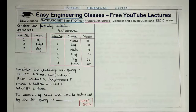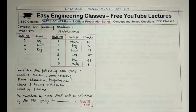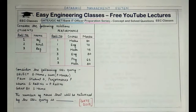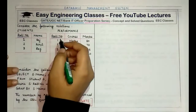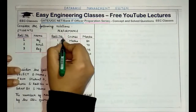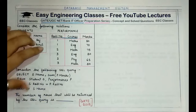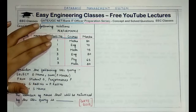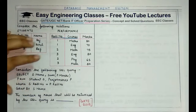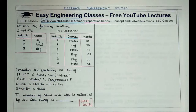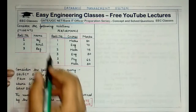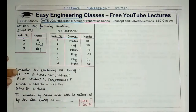In the Performance table, role number alone cannot be a primary key. A combination of role number and course will be the primary key, because a primary key cannot have repeated values — the primary key is always unique. So a combination of role number and course would define this table.